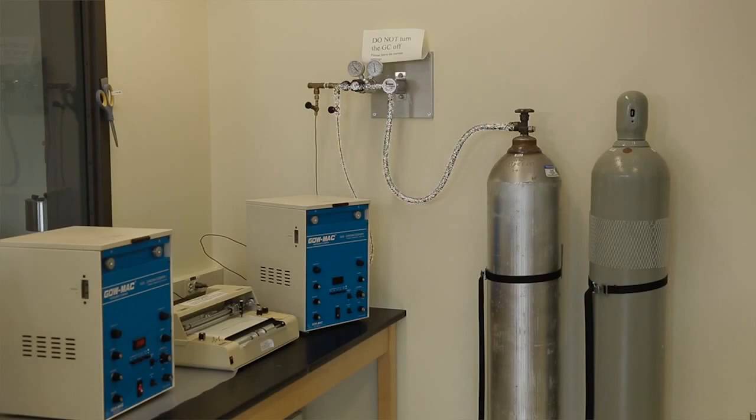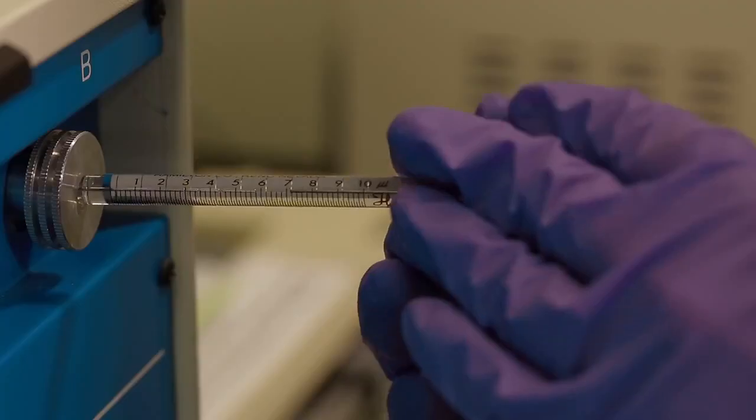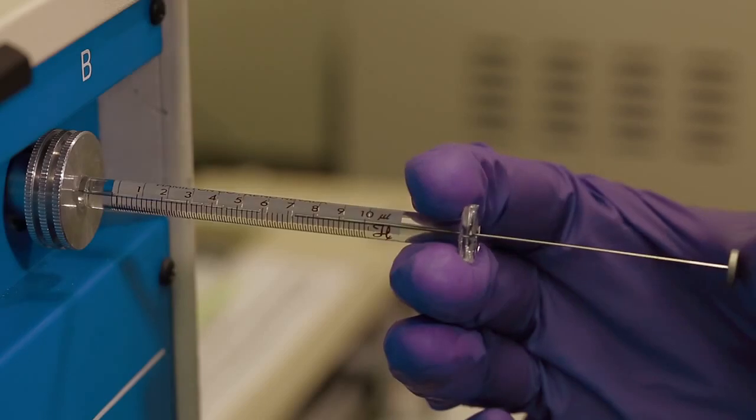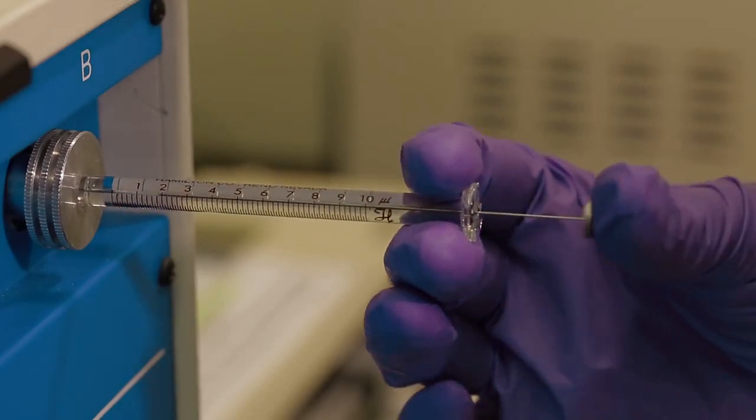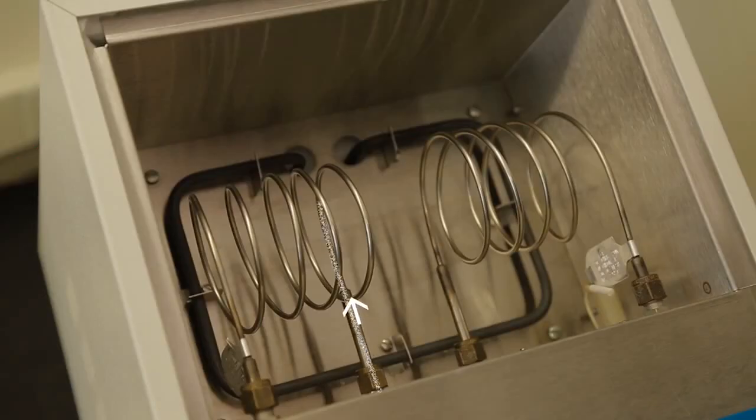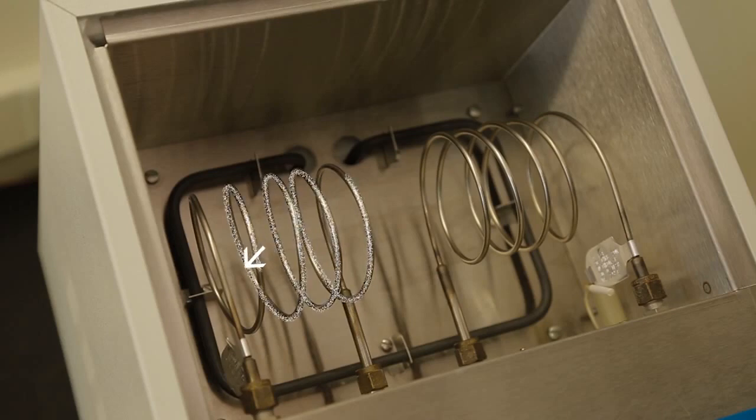Helium runs through the column and is the mobile phase. A sample injected into the gas chromatograph is instantly vaporized in a heated injection chamber so that the components are in the gas phase, and then it flows through the column. The helium is the carrier for your sample.